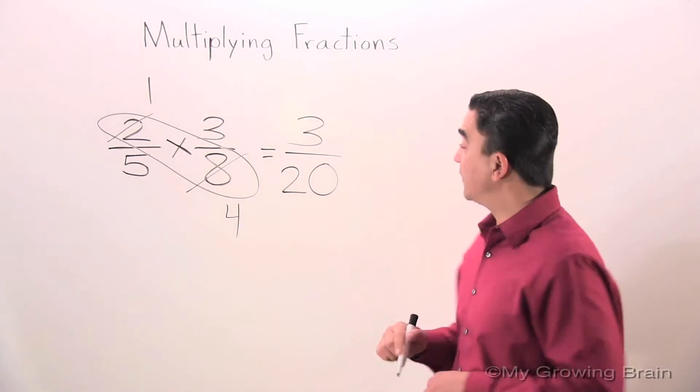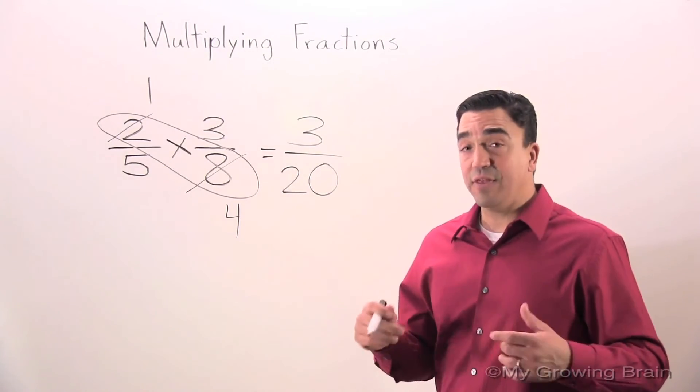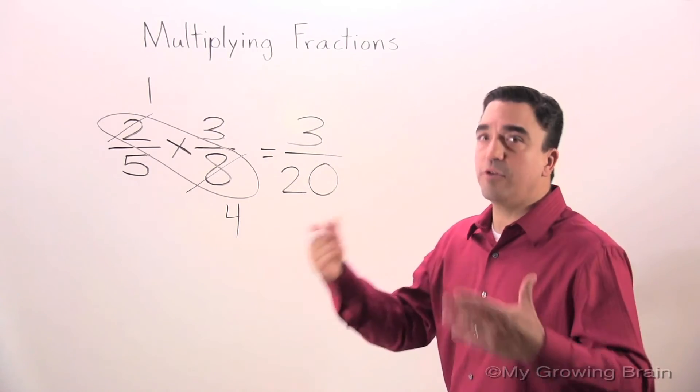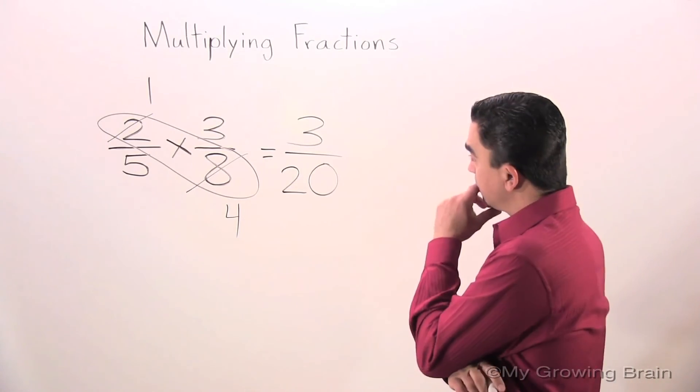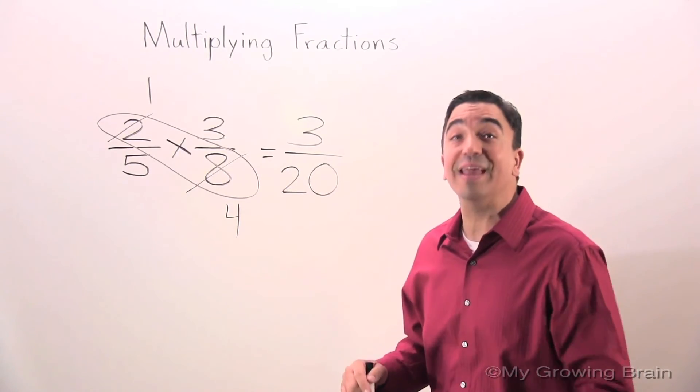Now we have to see if 3 twentieths is in simplest form. Can I think of a number that can go into 3 and 20 that's greater than 1 evenly? No, I can't. Therefore, 3 twentieths is in simplest form.